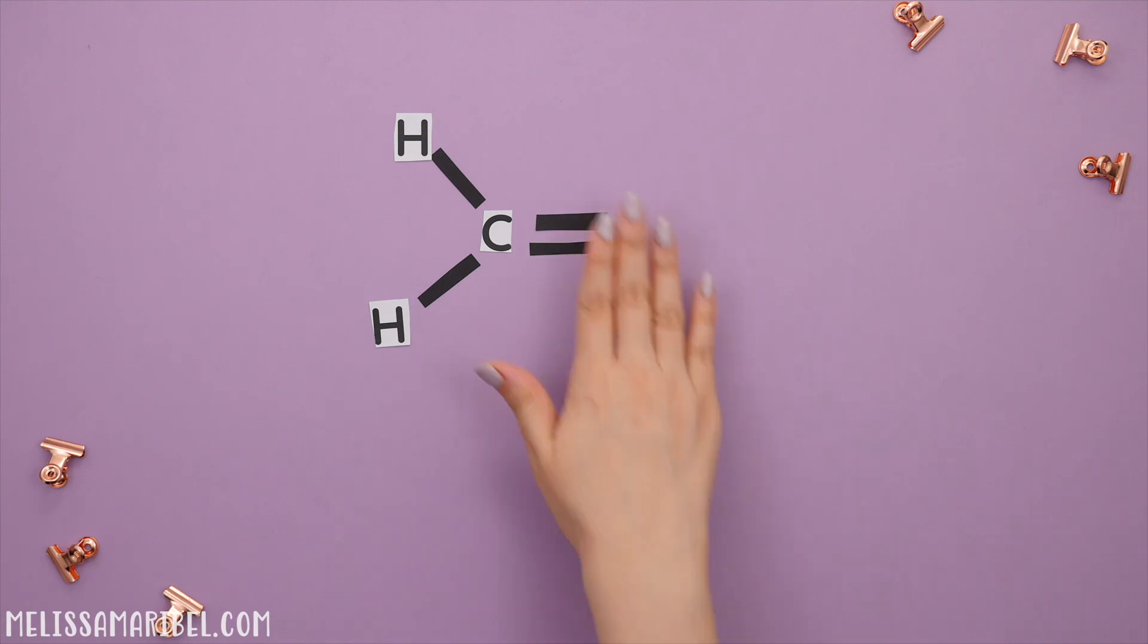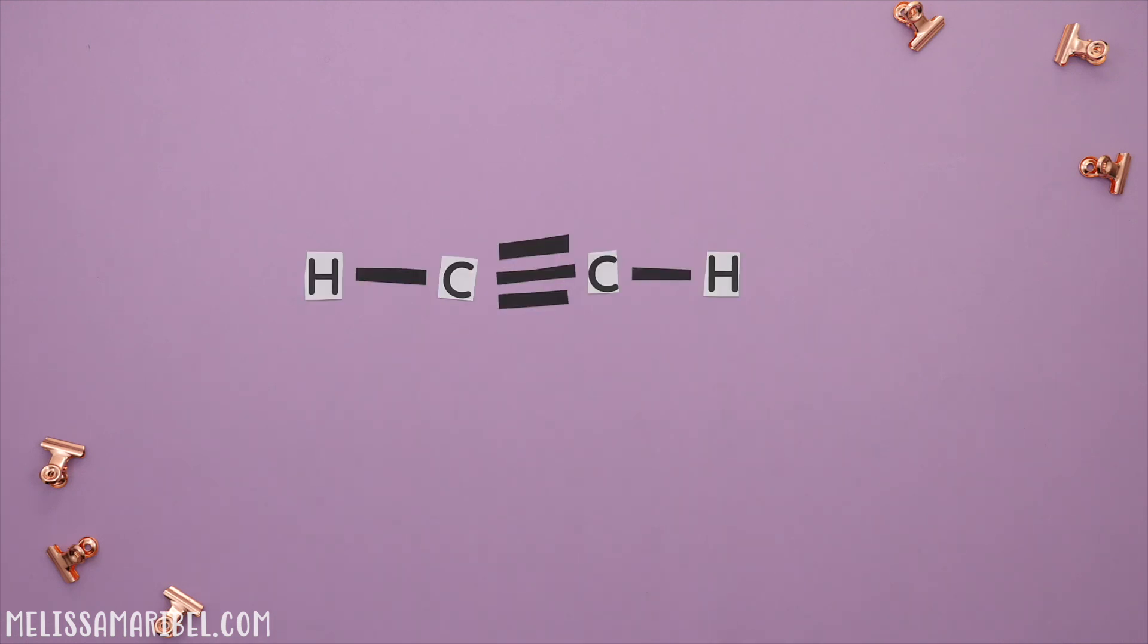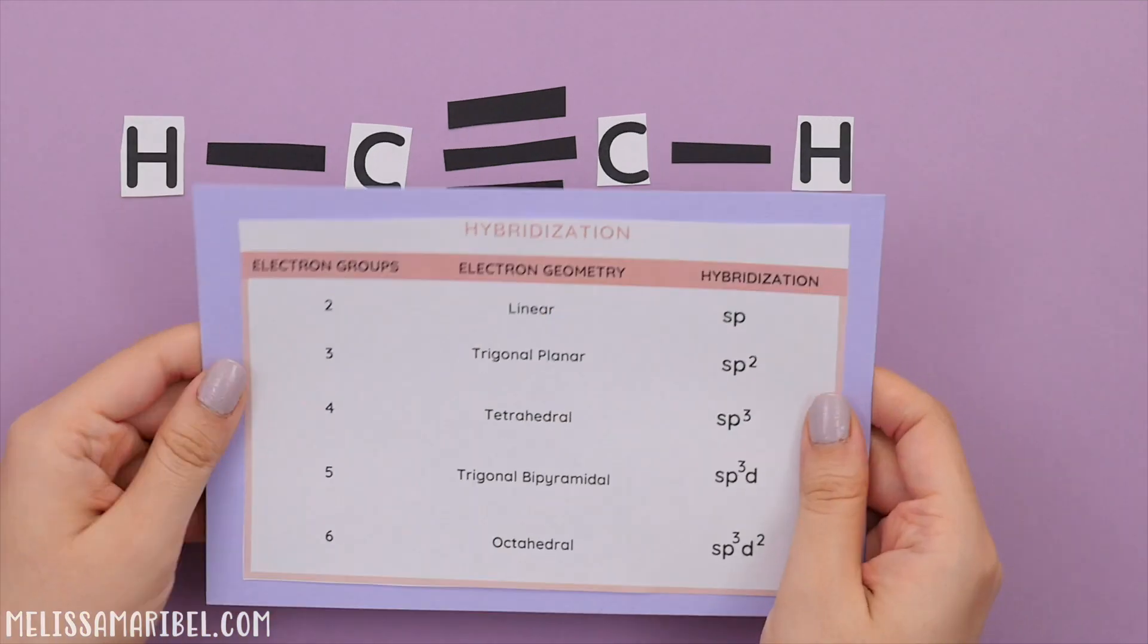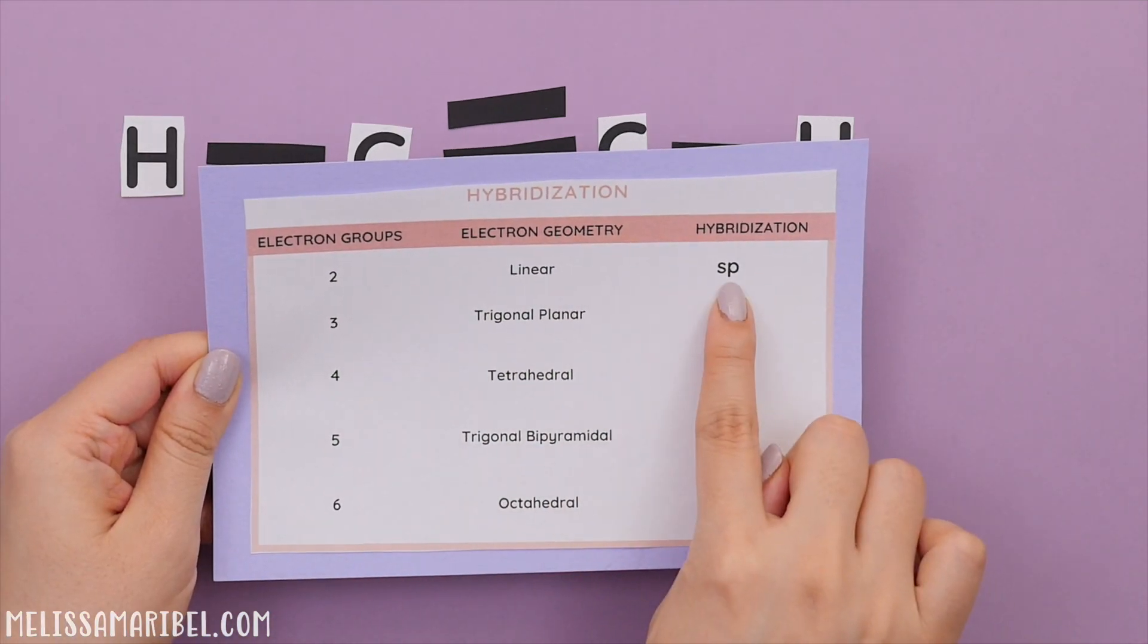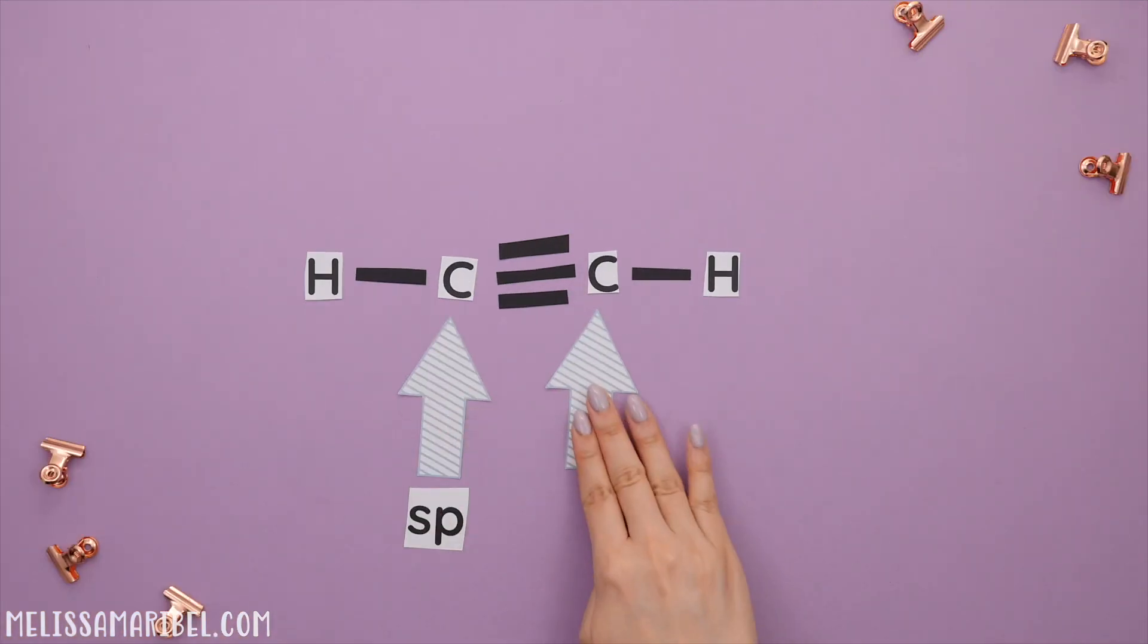Let's find the hybridization for each carbon in this structure. We'll find the electron groups first and the triple bond only counts as one bond. So we have one, two electron groups making it linear. So our hybridization for each carbon is sp.